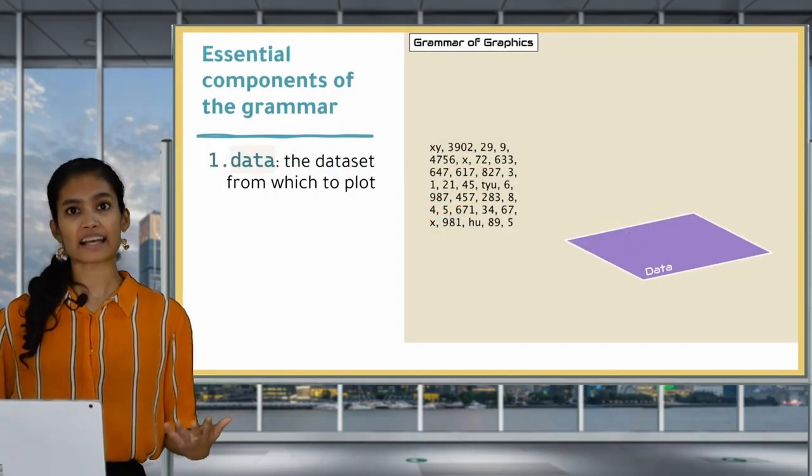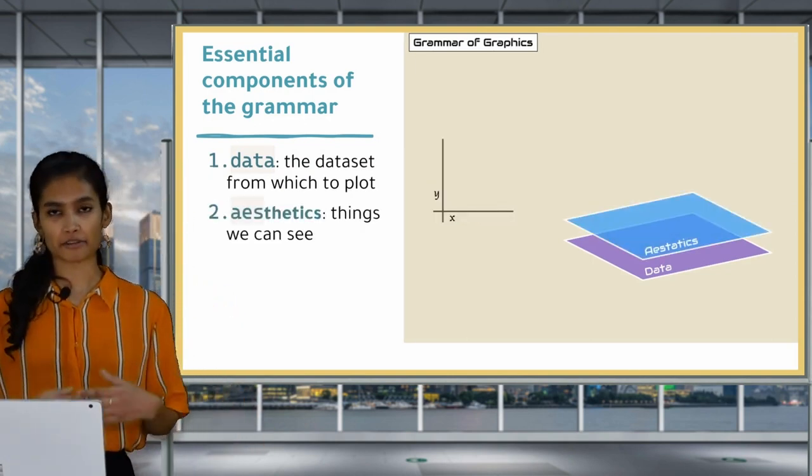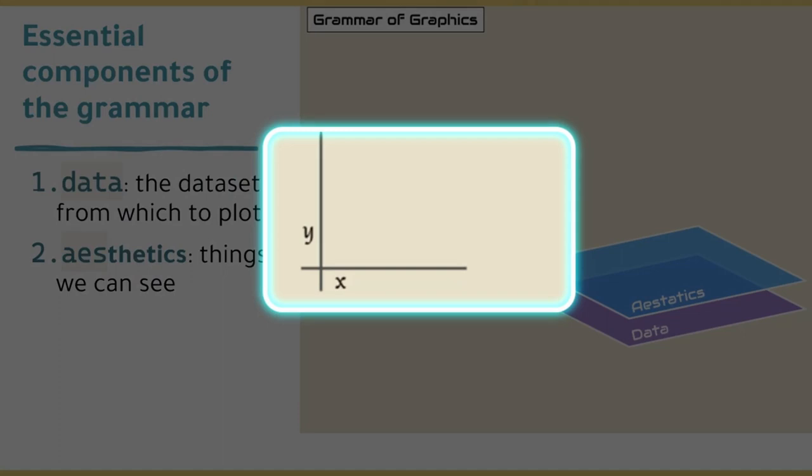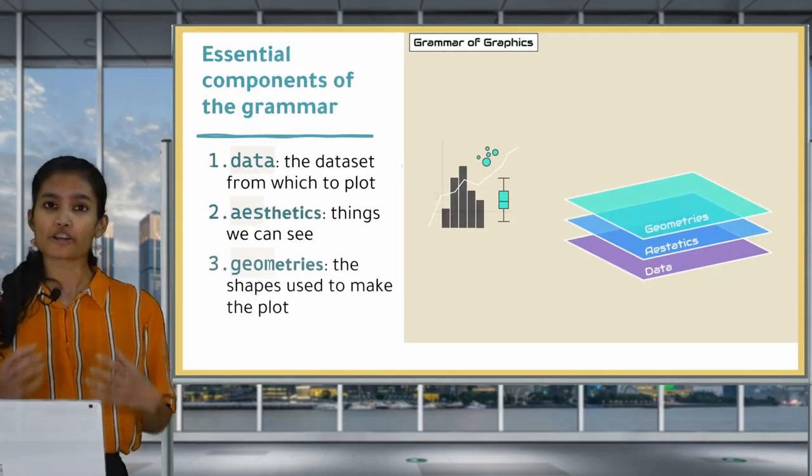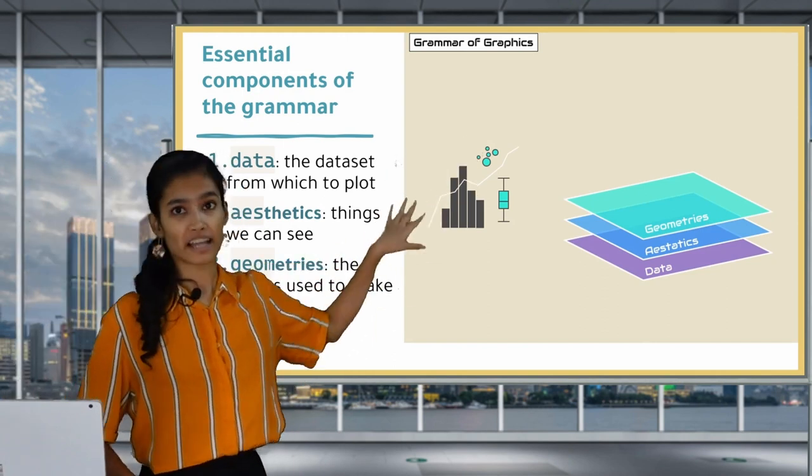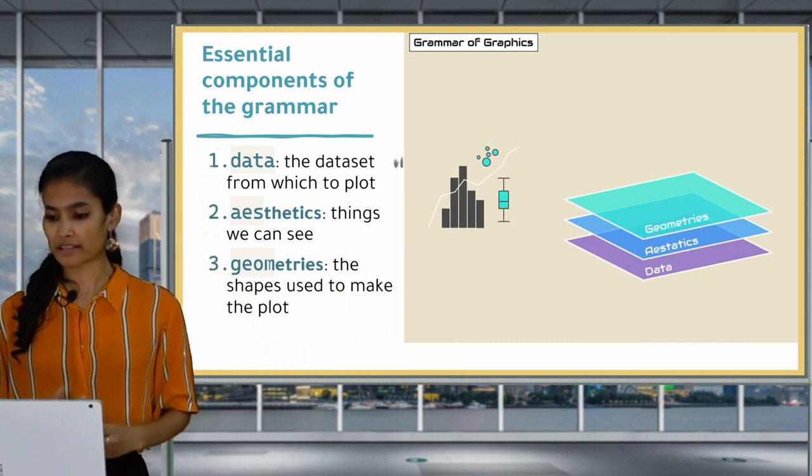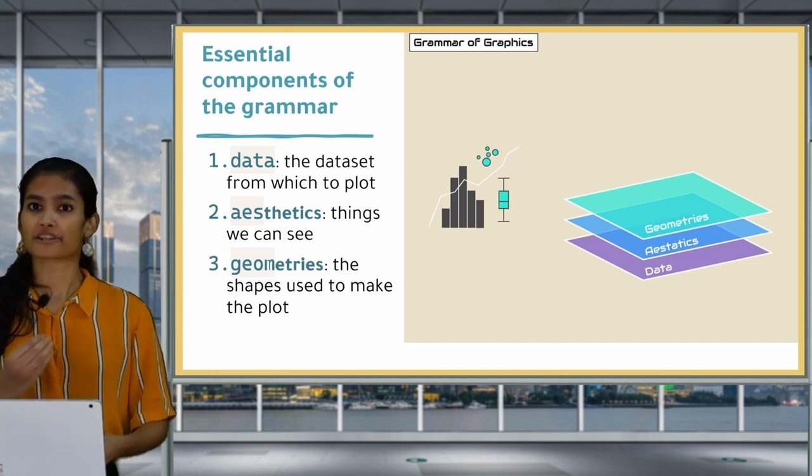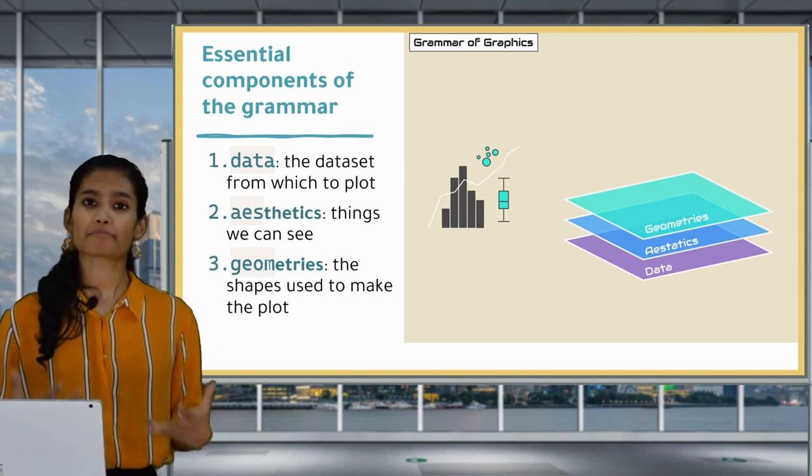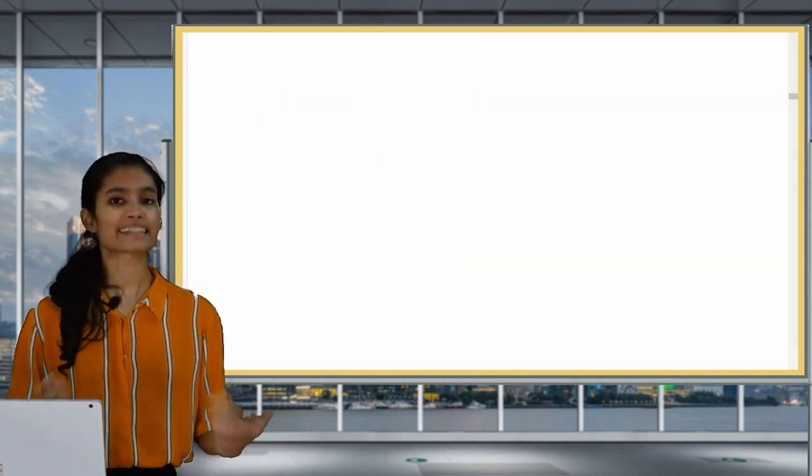The three layers that are absolutely required to make a plot are these three components: data, aesthetics, and geometries. Data is simply the data set that we want to plot from. Aesthetics are things we can see that visually represent the information in the data that we provided. The aesthetics that we most commonly use in our plots are the x and y variables. Geometries are the shapes used to make the plot. For example, points, lines, or boxes. Points make a scatter plot, lines make a line graph, and boxes make a box plot. Don't worry if all of these terms don't make sense quite yet. It is a challenge to keep up with the ggplot syntax, but once you get practice writing this code in R, you'll become fluent in no time.